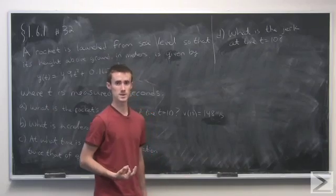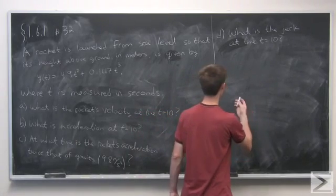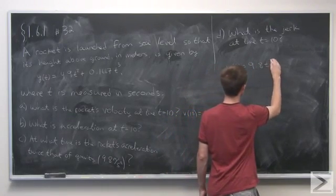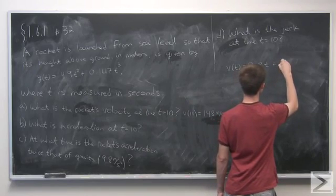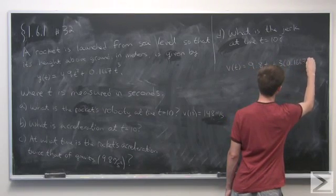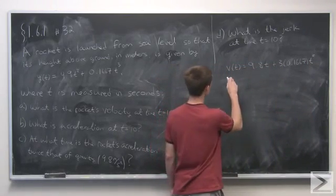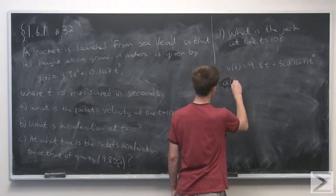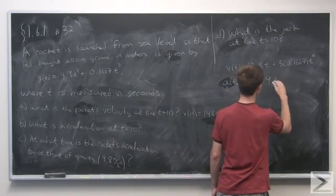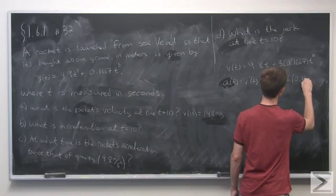The second question is: what is the acceleration at time t equals 10? The acceleration at time t is the derivative of the velocity function. Velocity was 9.8t plus 3 times 0.1667 t squared. So the acceleration at time t will be 9.8 plus 2 times 3, or 6, times 0.1667 times t.